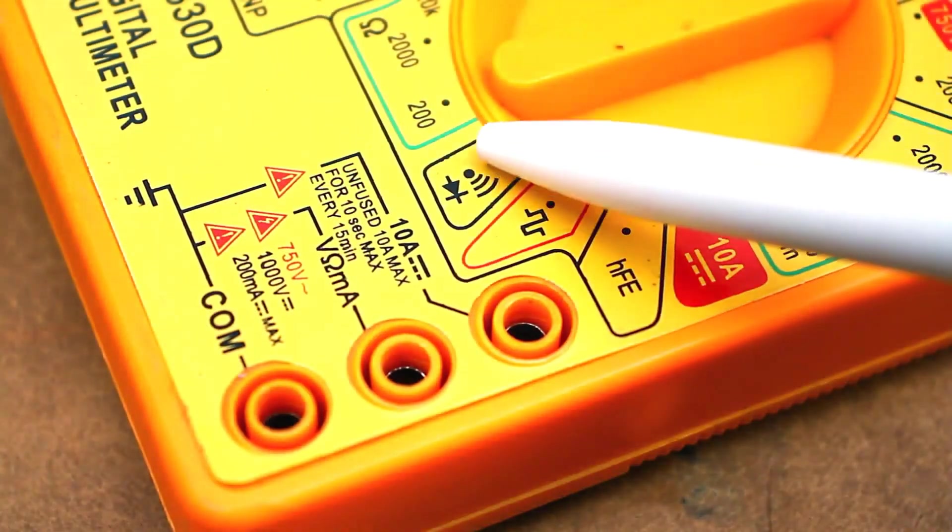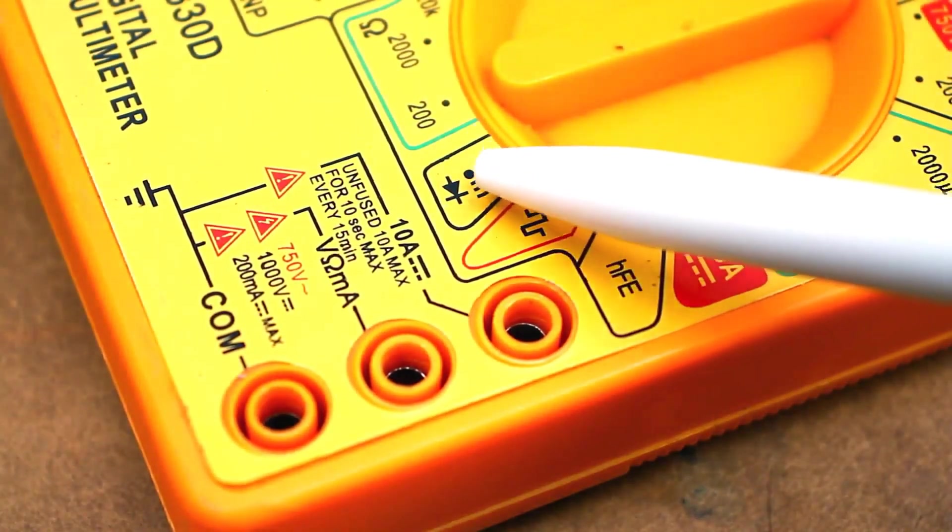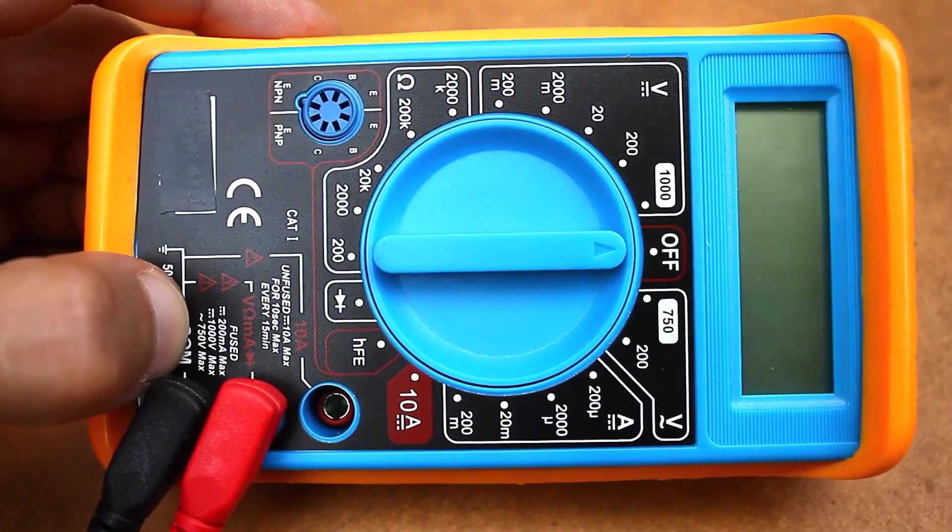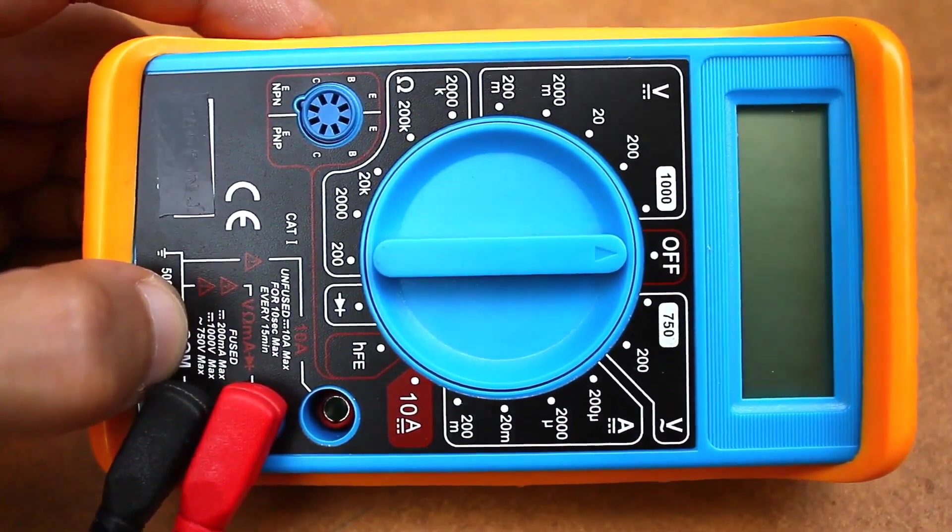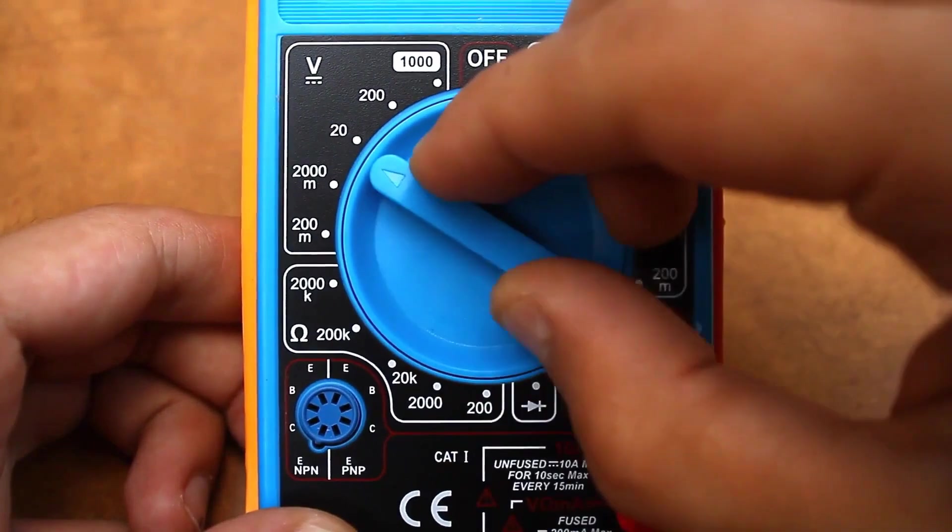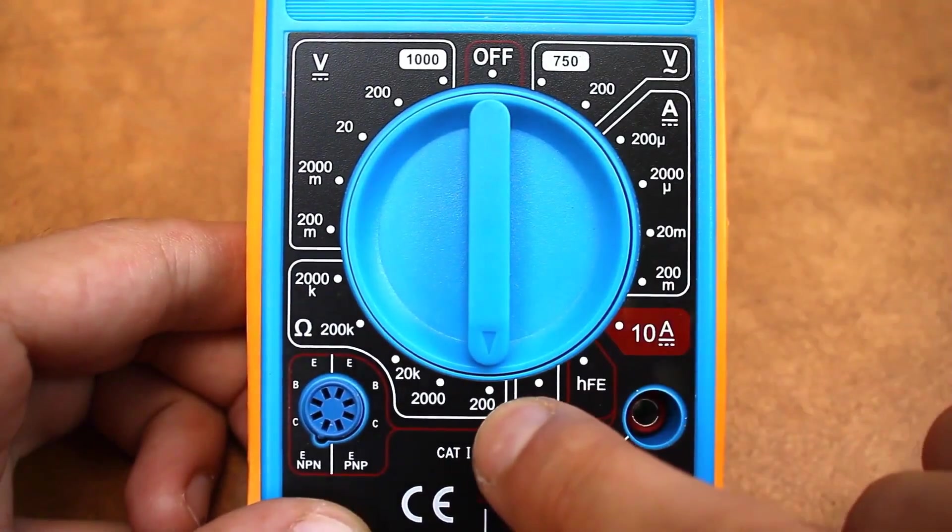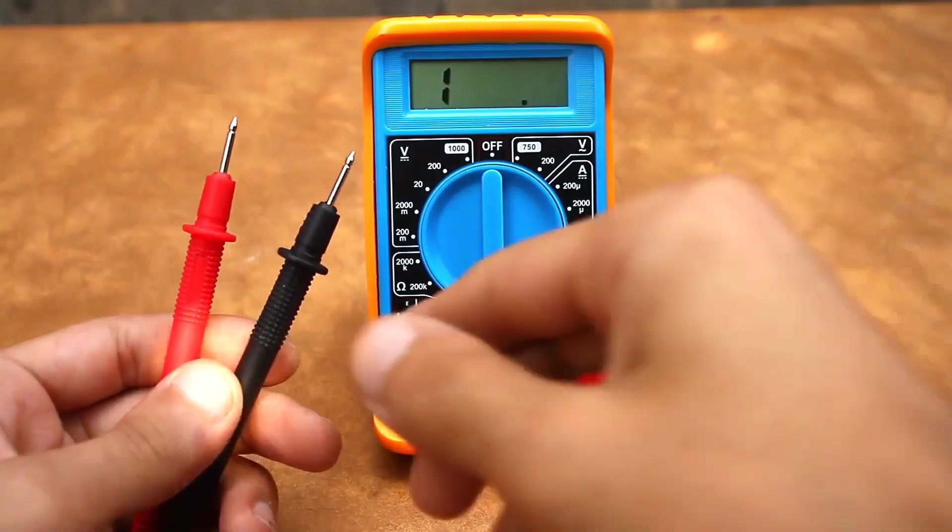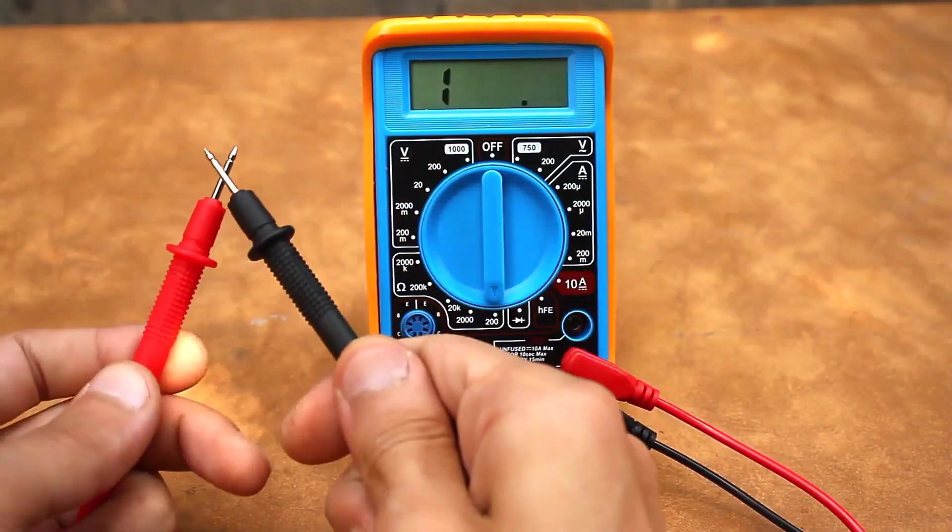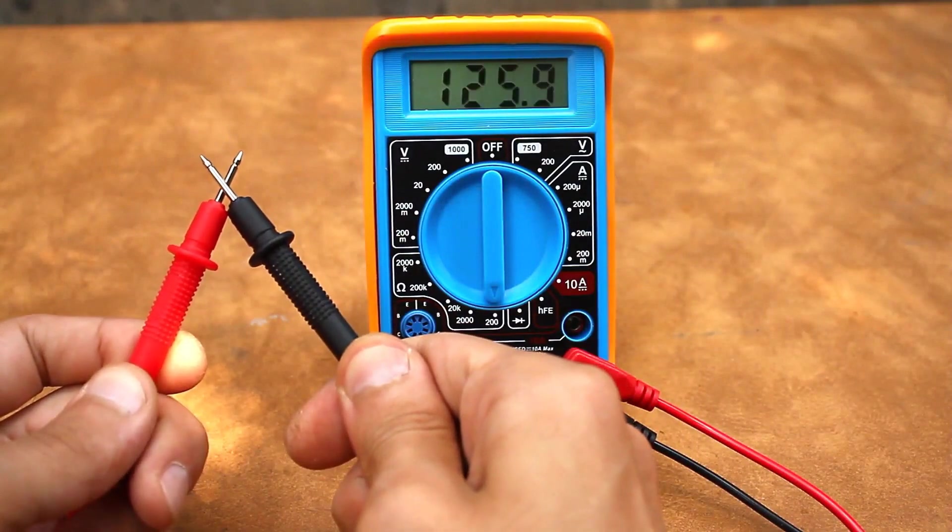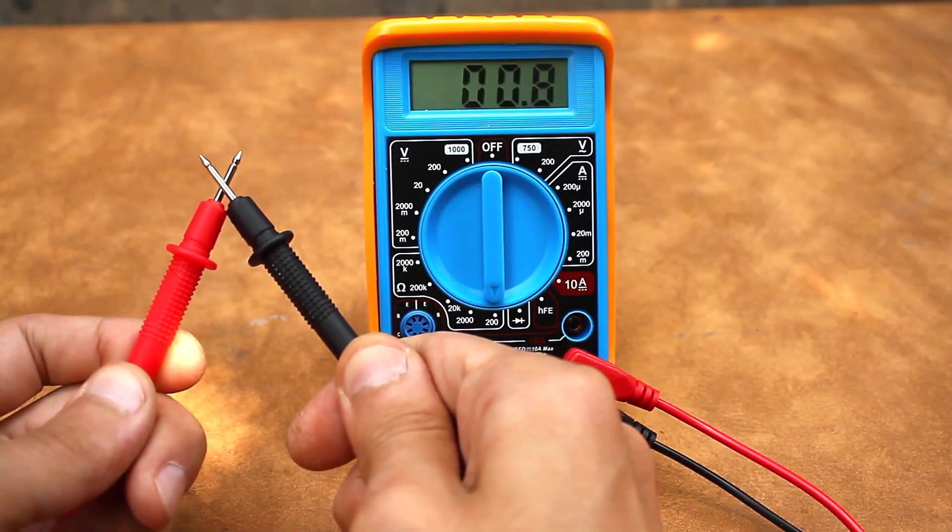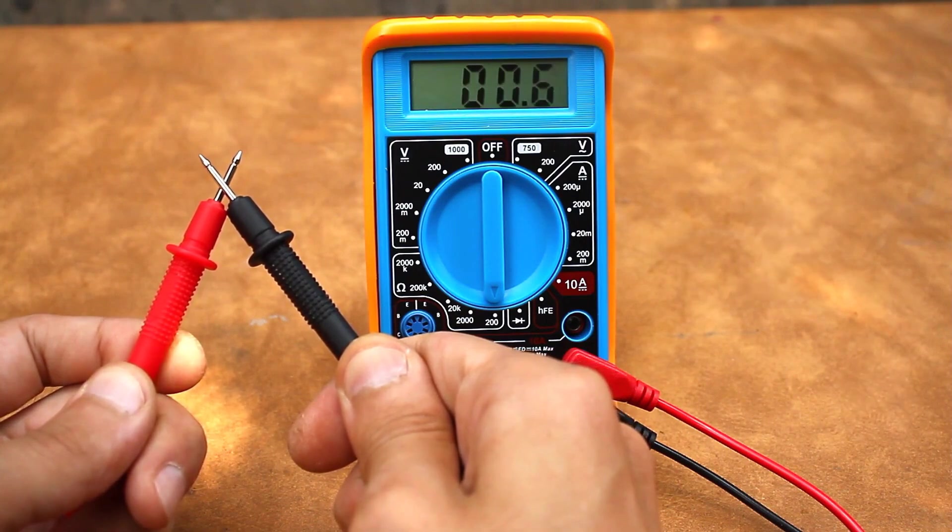If the multimeter is not equipped with a continuity buzzer, which is very rare and only in the cheapest multimeters, it's not a problem. You just need to switch the multimeter to resistance measurement mode and set it to the lowest value, for example, 200 ohms. Short the probes. On the multimeter display, you will see the resistance value of the probes. Typically, this is about 1 ohm or less. If the multimeter is accurate and the probes are good, then the resistance will be lower.